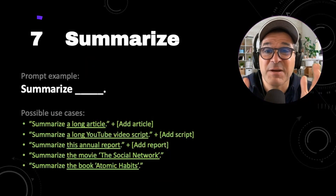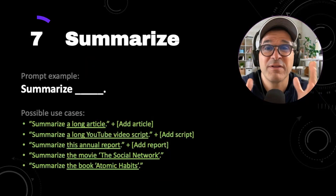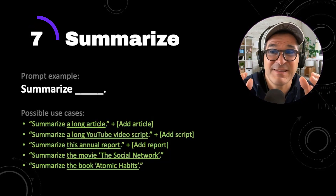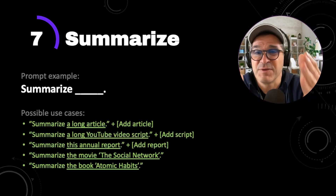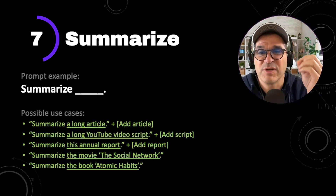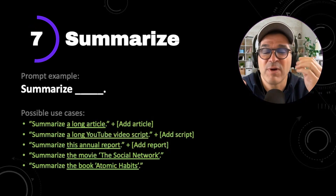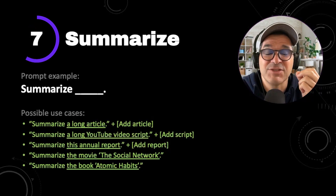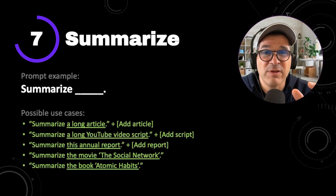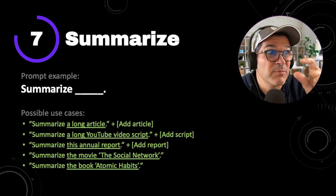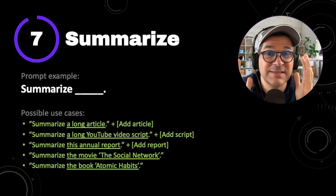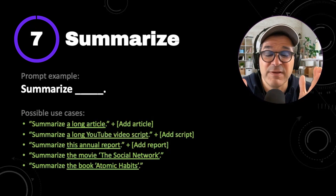Power prompt seven is summarize. This is one of the first prompts most people start using with ChatGPT — it's like magical superpowers. Basically the prompt is summarize blank. You can summarize articles, video scripts, an annual report, a movie, or a book. And rumor has it that ChatGPT is now working on a browse feature, so pretty soon you'll be able to give ChatGPT a link and it'll go out on the web, grab the article, and summarize it for you. This is crazy — I'm looking forward to that feature.